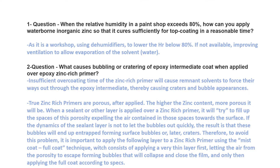My first question is one that a lot of people have asked me, so that's why I selected it. The first question is: when the relative humidity in a paint shop exceeds 80%, how can you apply waterborne inorganic zinc coating so that it cures sufficiently for top coating in a reasonable time?